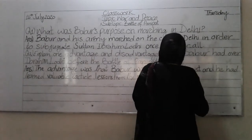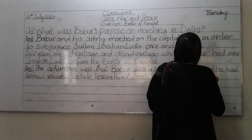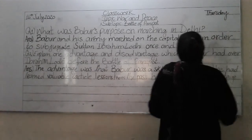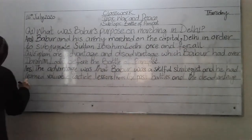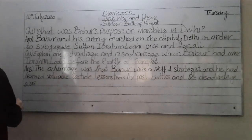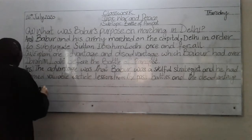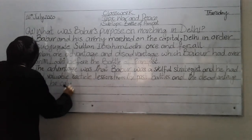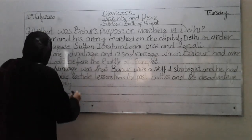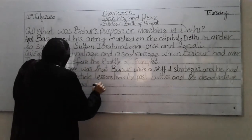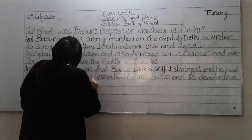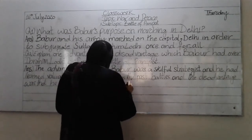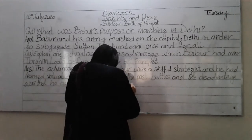And the disadvantage was that he only had 15,000 troops when he came.